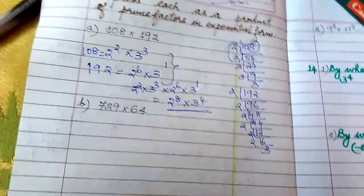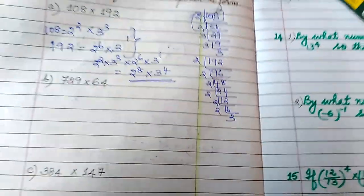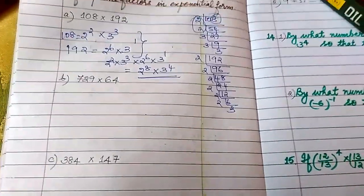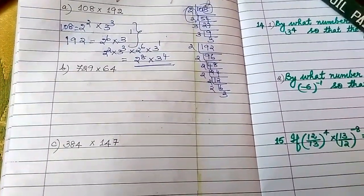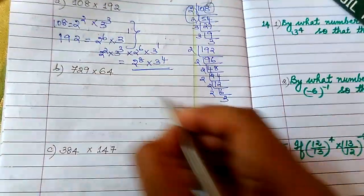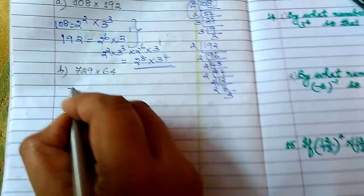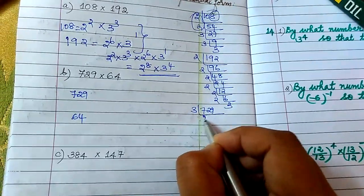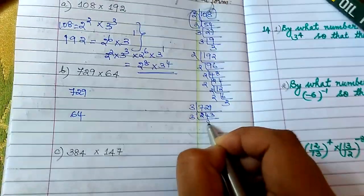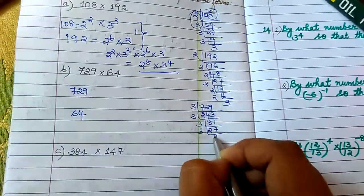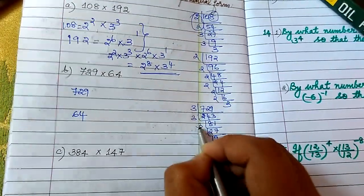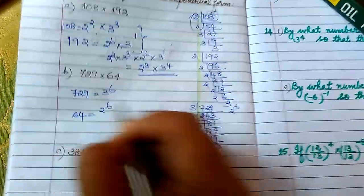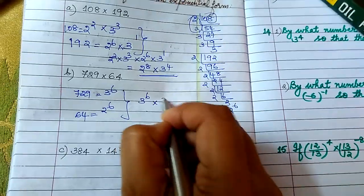Now next is 729 into 64. For 729, divide by 3 repeatedly: 3, 243, 81, 27, 9, 3, 1 — that is 3 to the power 6. And 64 is 2 to the power 6. So you multiply: 3 to the power 6 into 2 to the power 6. Now for 384 into 147: 384 is an even number so divide by 2. After repeated division by 2 we get 2 to the power 7 into 3. For 147, an odd number, divide by 7: 147 gives 21, then 7, then 3. So 147 is 7 square into 3. Multiplying: 2 to the power 7 into 3 square into 7 square.